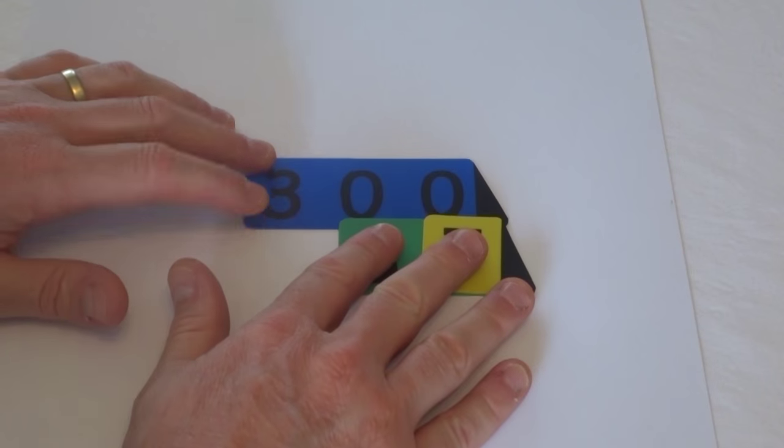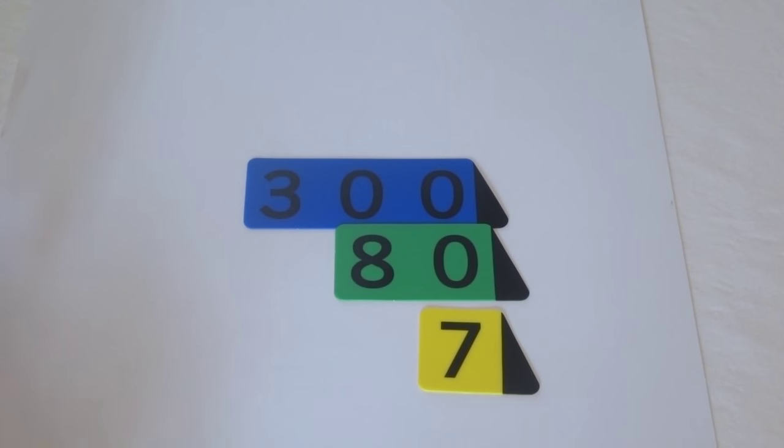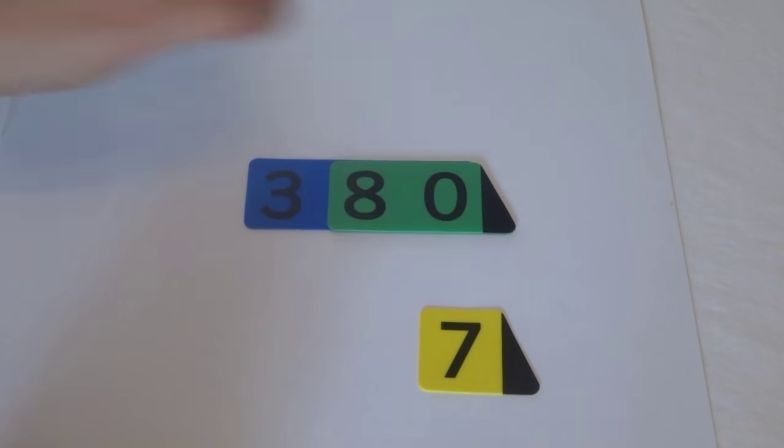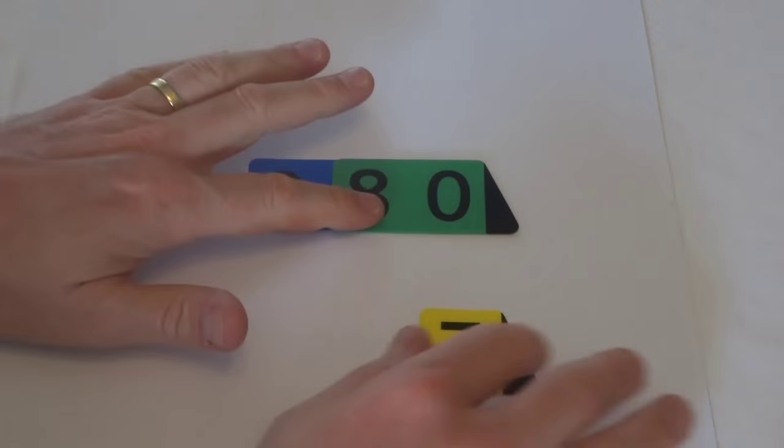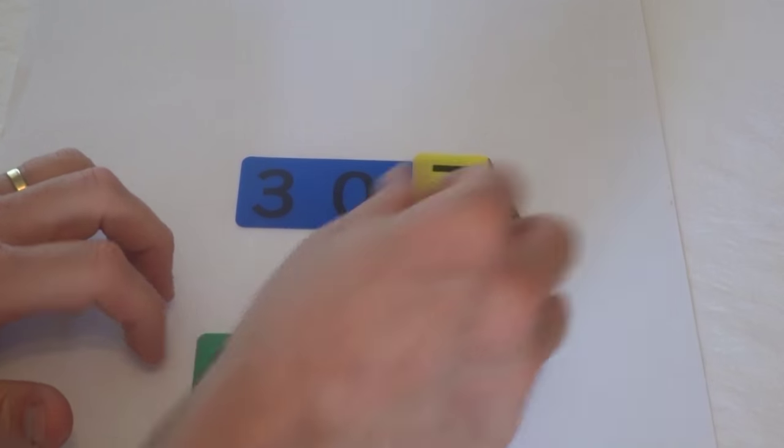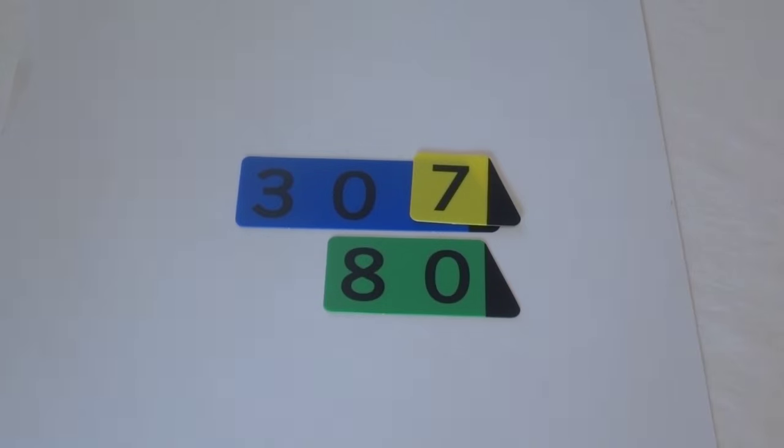Three hundred and eighty-seven is three hundred and eighty and seven, but it's also three hundred and seven and eighty. So you can see how just by using the arrow cards it helps you split numbers up a little better and helps children appreciate that.